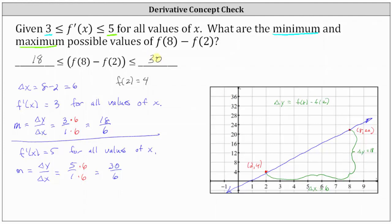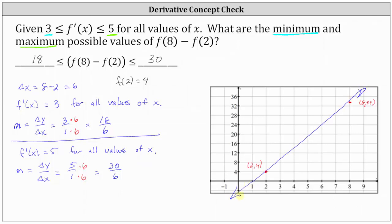To demonstrate this on the coordinate plane, when the change in x is 6 the change in y is 30. Adding 6 to the x coordinate gives 8, and adding 30 to the y coordinate of 4 gives 34, so the graph contains the point 8 comma 34. The graph of f of x would be a line with slope 5 passing through these two points, where delta x equals 6 and the change in y — f of 8 minus f of 2 — is 34 minus 4, which is 30. I hope you found this helpful.